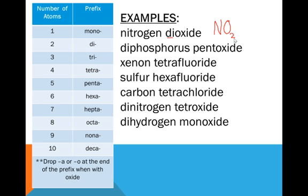Diphosphorus pentoxide. So we need phosphorus and we need two of them. Pent means five, so I need five oxygens. Xenon tetrafluoride. Xenon, there's only one of them because there's no prefix. Tetra means four. So fluoride is fluorine. So four fluorines. XeF4.